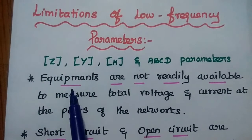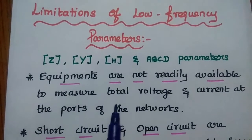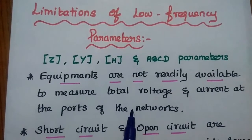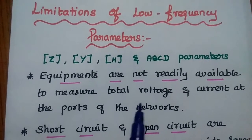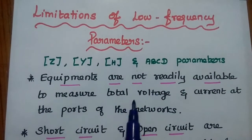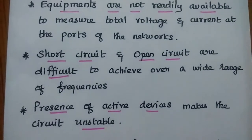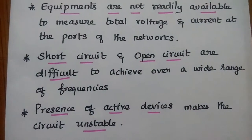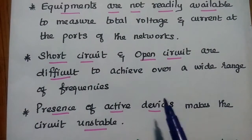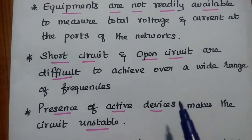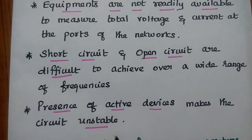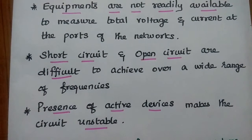The reasons are: First, equipment is not readily available to measure the total voltage and current at the ports of the network. Since the frequency is very high, the total voltage and current are also very high, and we don't have specific equipment for that. Second, short circuit and open circuit conditions are difficult to achieve over a wide range of frequencies. In low frequency, we can make short and open circuits easily with resistors and capacitors, but at wide frequency ranges, it is too difficult.